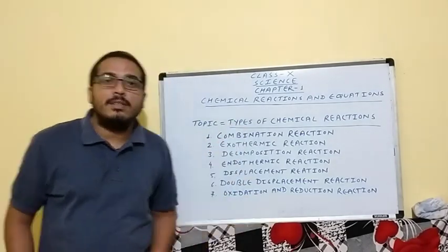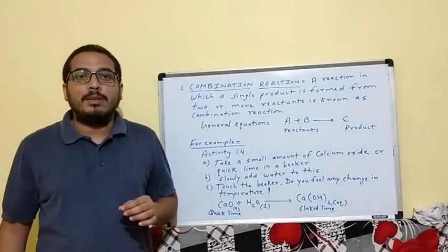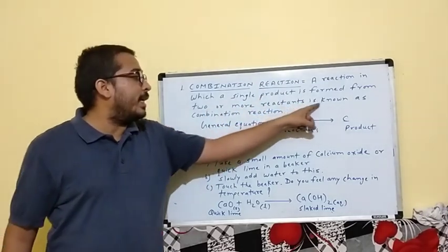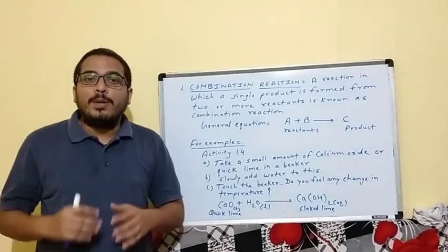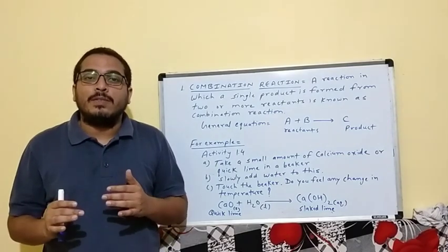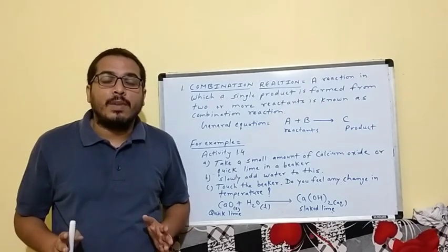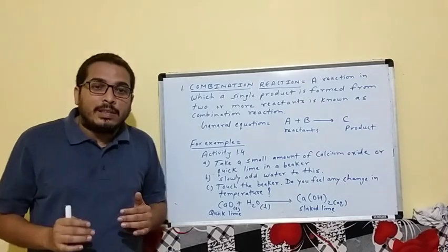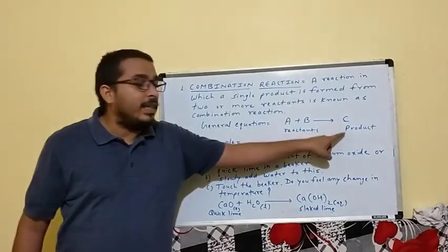You can take a screenshot of this content. The first type of reaction is combination reaction. Combination reaction means a reaction in which a single product is formed from two or more reactants. When we combine two or more substances they form a single product — this is called a combination reaction. The general formula is A + B → C, where A and B are reactants and C is the product.